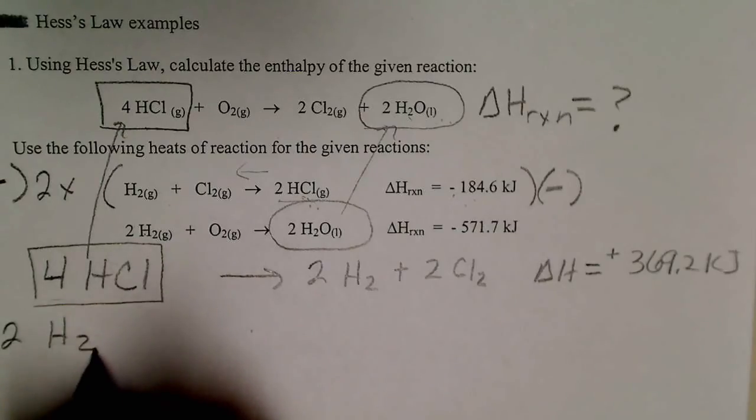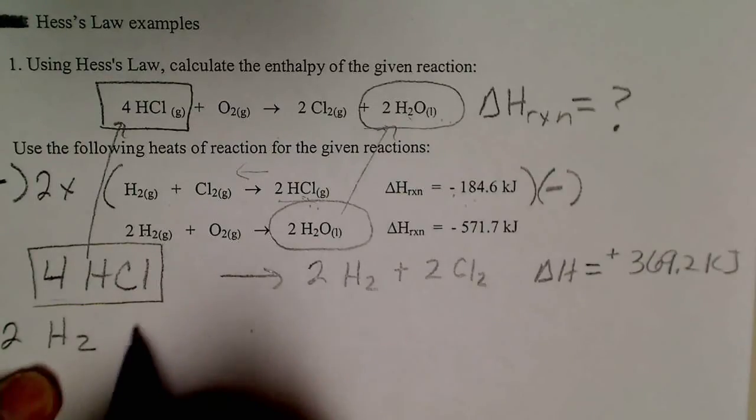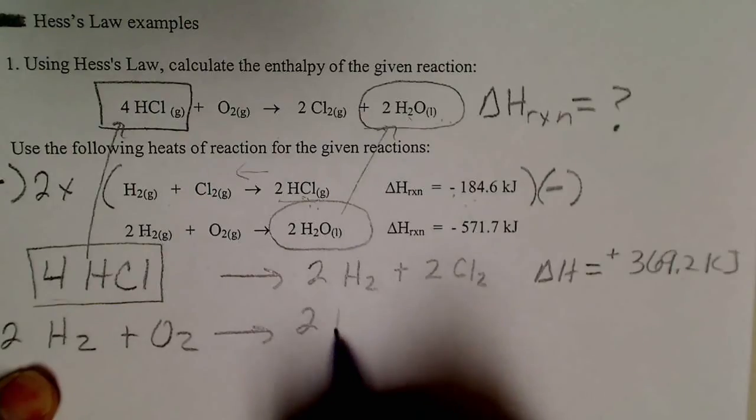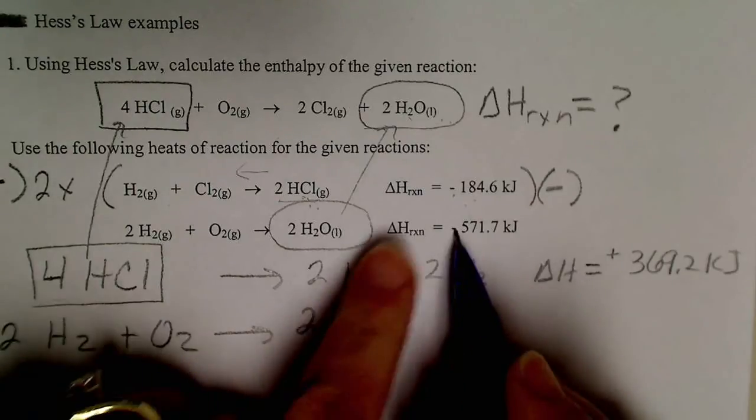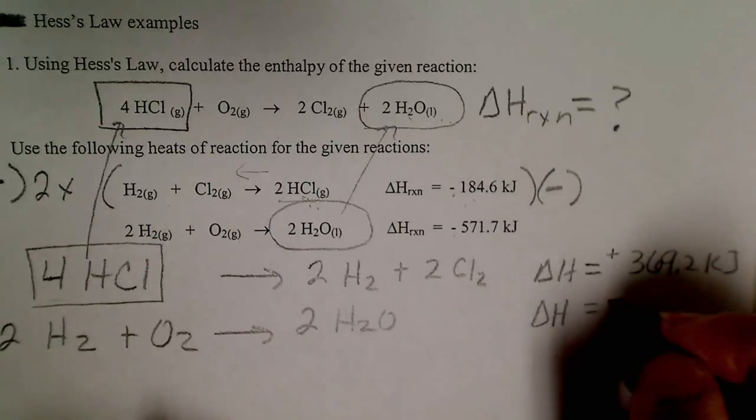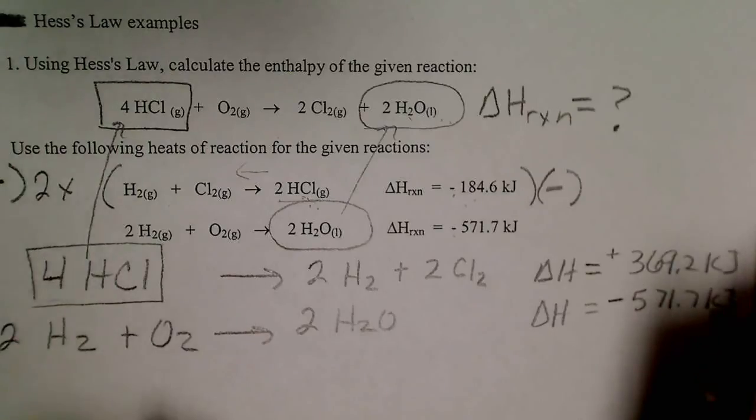So I'll rewrite this equation. Two hydrogens, I'm leaving off the states just to have less of a mess. Two hydrogens plus an oxygen is going to make two waters. So the delta H for that reaction, I'm just going to rewrite that number, 571.7 kilojoules.